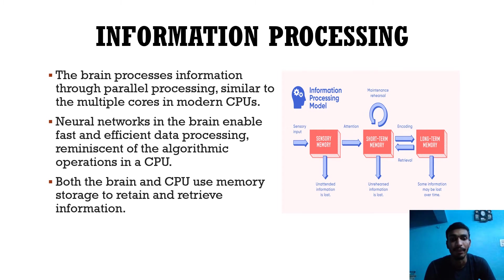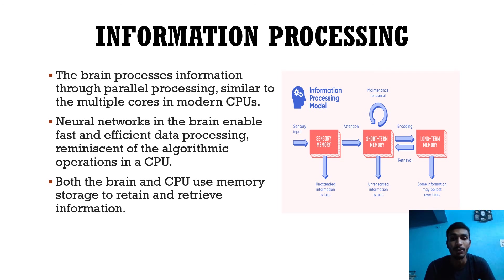Information processing: the brain processes information through parallel processing, similar to multiple cores in modern CPUs. Neural networks in the brain enable fast and efficient data processing, reminiscent of algorithmic operations in the CPU. Both the brain and CPU use memory storage to retain and retrieve information.